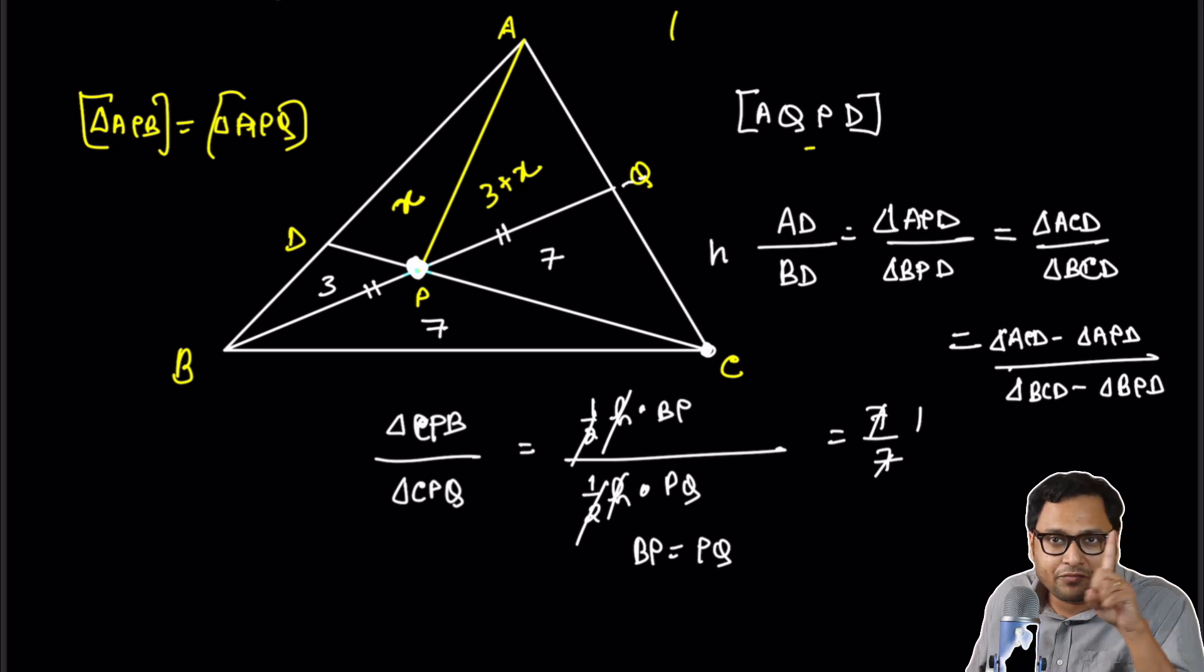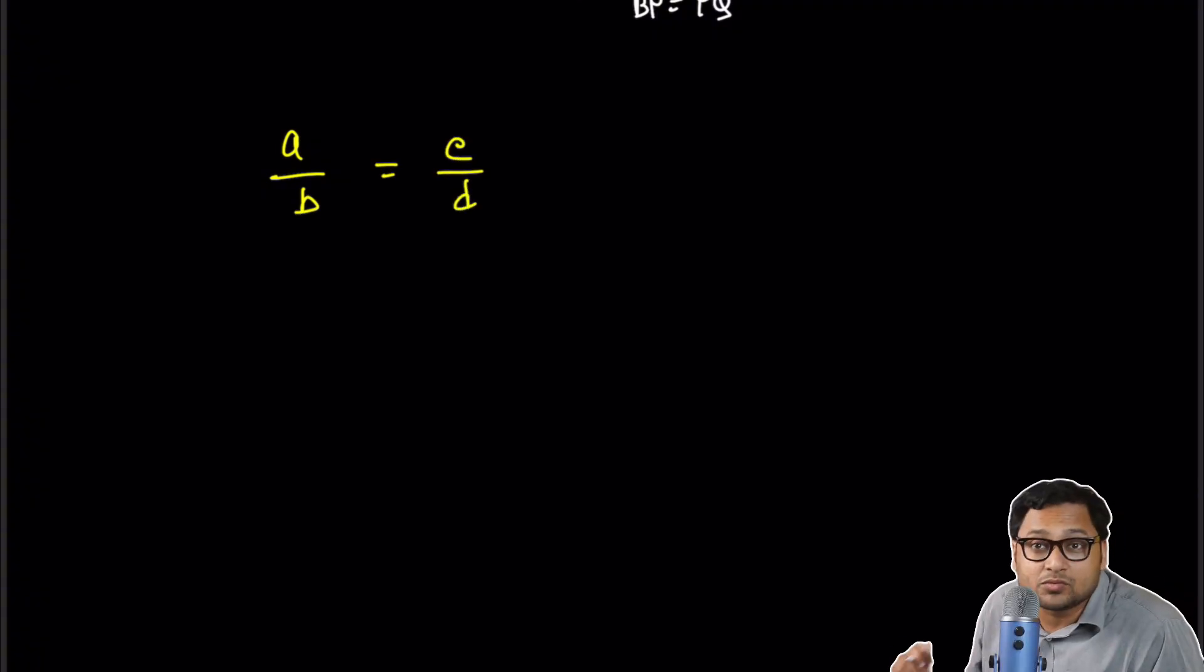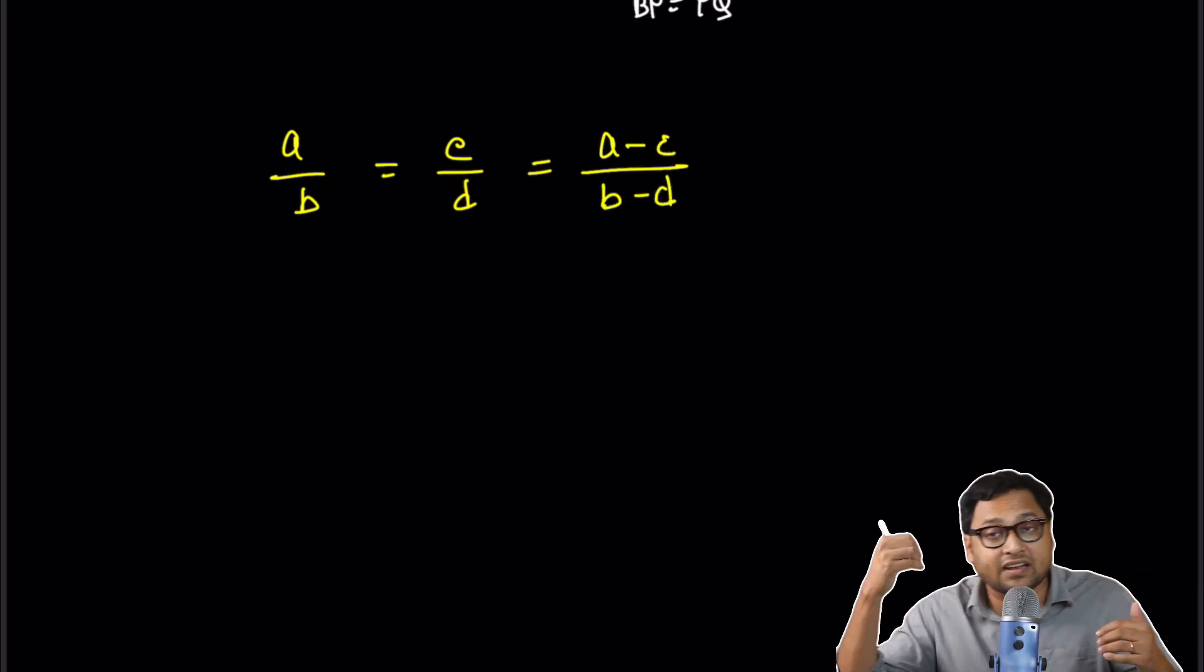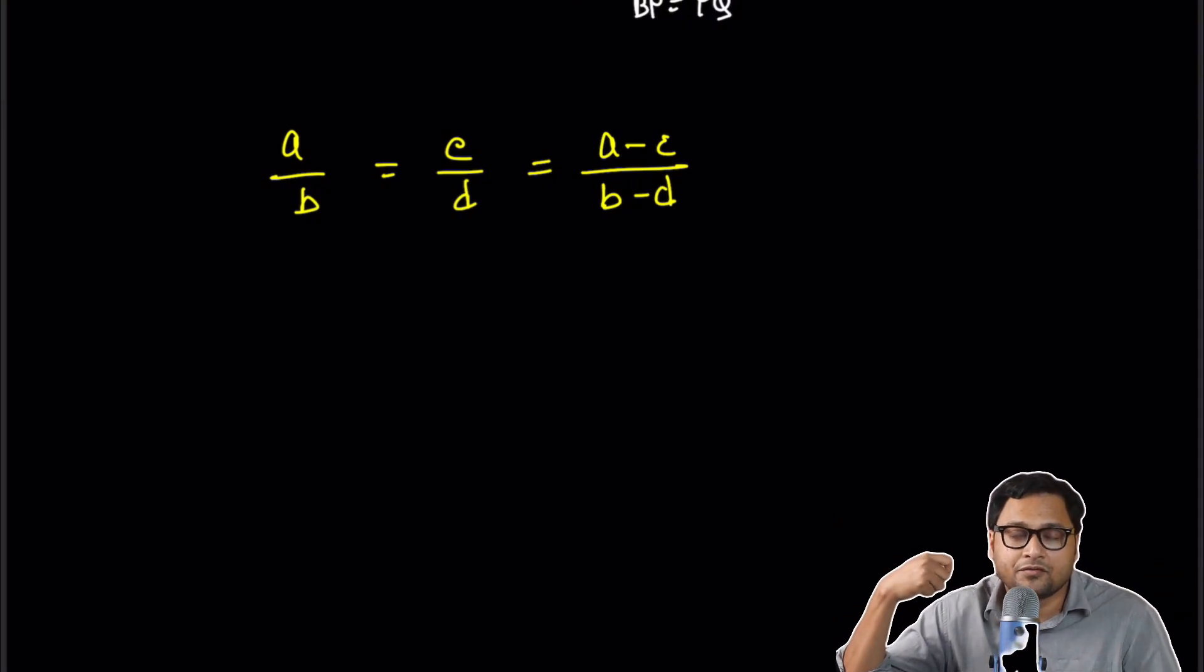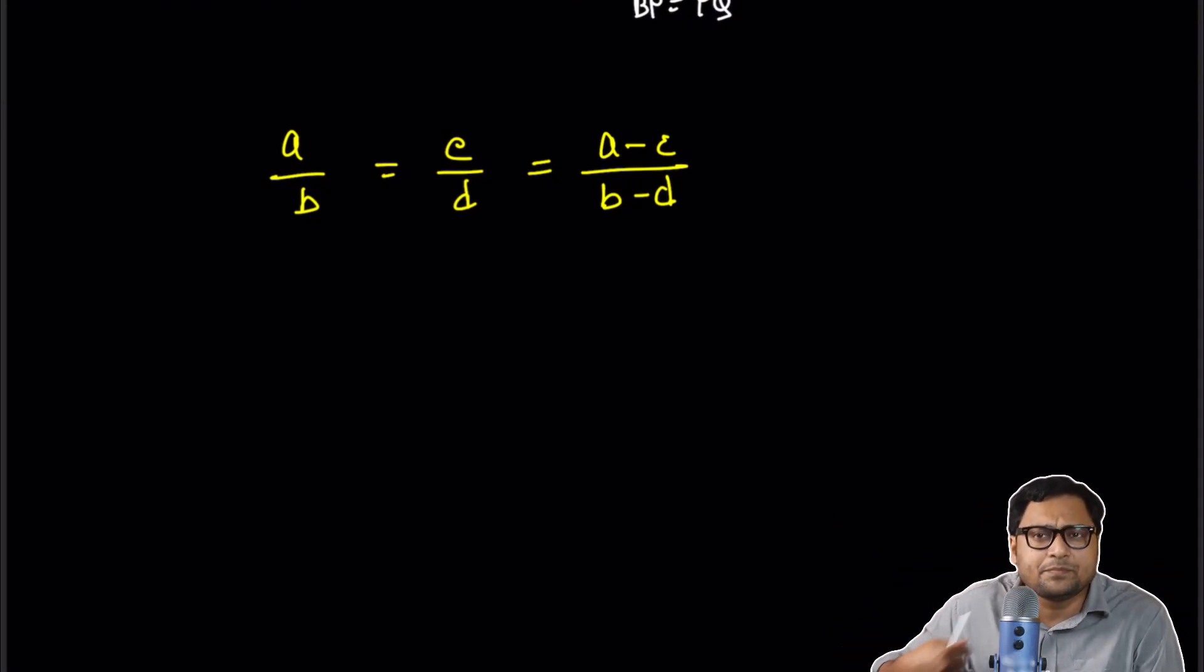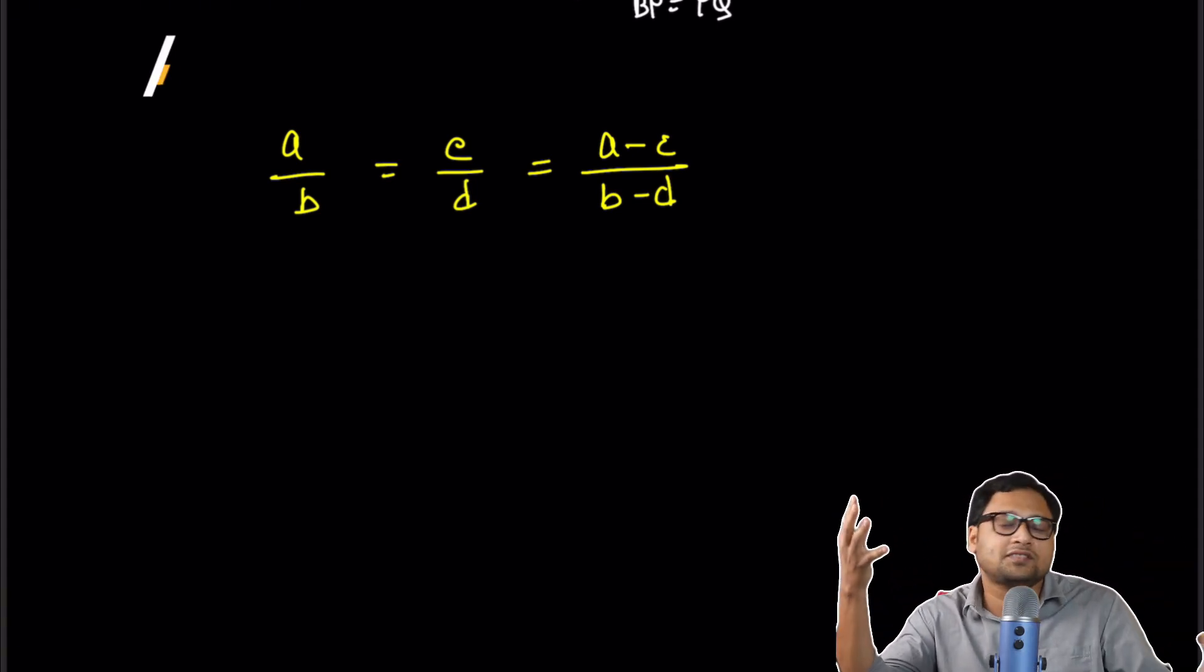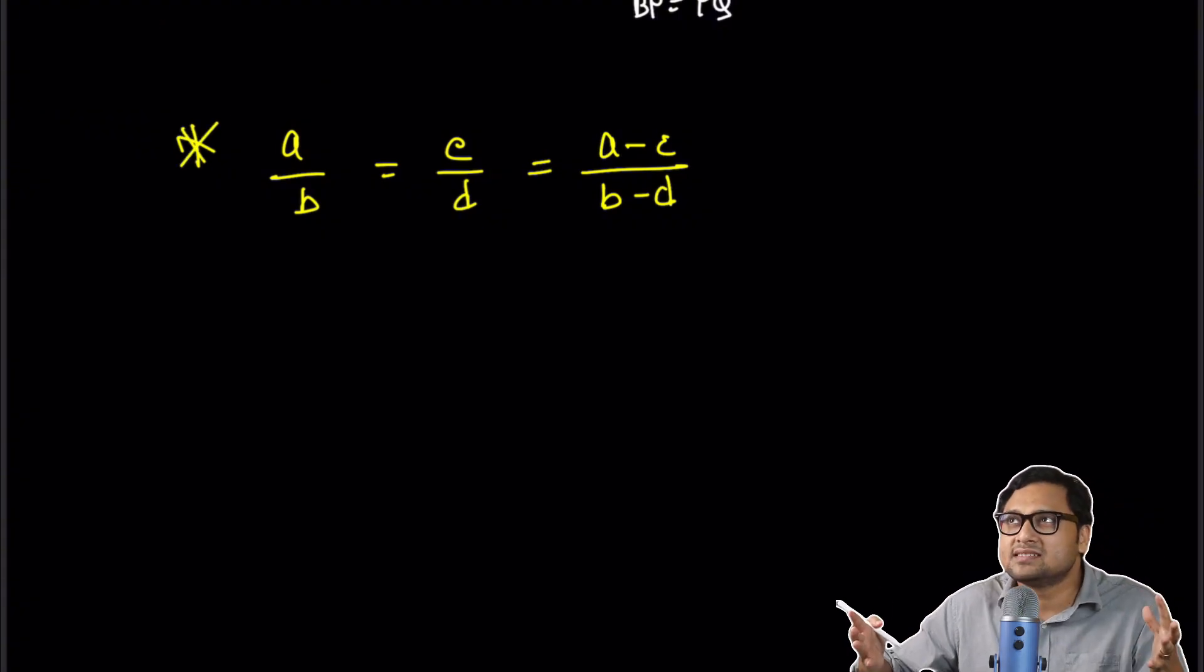I'll come back to this in a moment, but let me explain one more time what we just did. If A by B is equal to C by D, if these two ratios are equal, then both of them will be equal to A minus C divided by B minus D or A plus C divided by B plus D. This is known as a subtrahendo or addendo principle from proportionality. You can easily prove this as a homework or as a challenge. Can you try to prove this using tools in algebra? This is the principle that we are using.